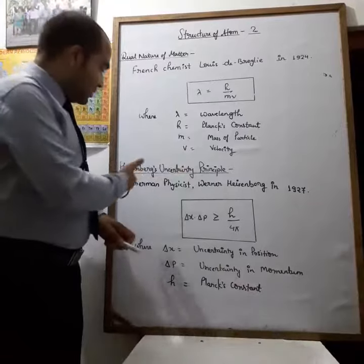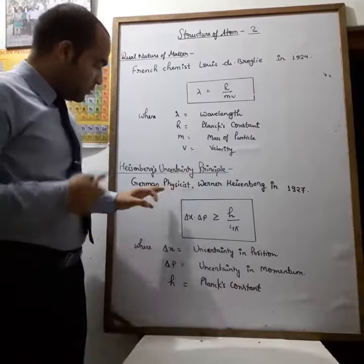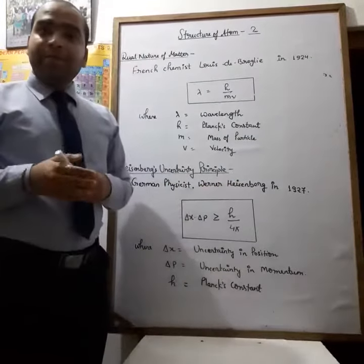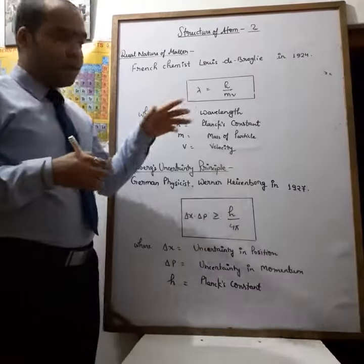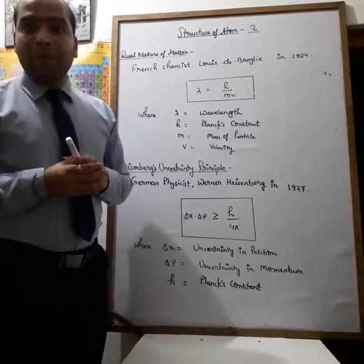v is velocity. Next is Heisenberg's uncertainty principle, given by German physicist Werner Heisenberg in 1927. In this law, he clearly stated that while measuring the position and momentum of a moving microscopic particle,